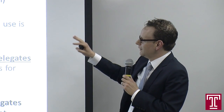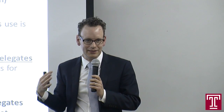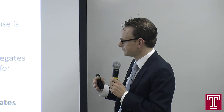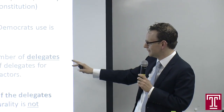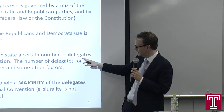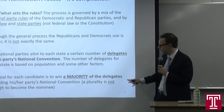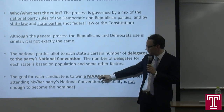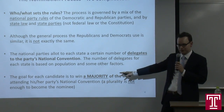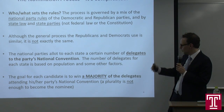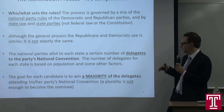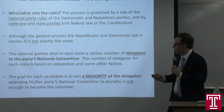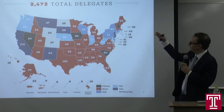The Republicans and Democrats use a similar but not identical process. Both parties allot each state a certain number of delegates to the national convention. The name of the game is winning more delegates than your opponents. Crucially, for both parties you need a majority — more than 50%. It's not enough to simply have the most. If you have 40% and two opponents have 30% each, that is not good enough.